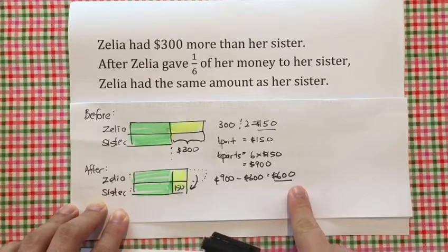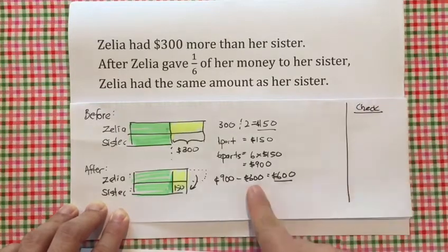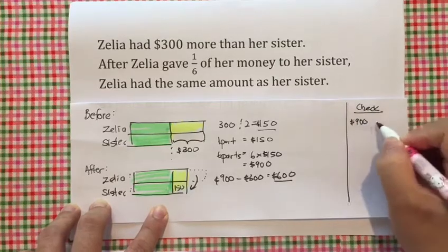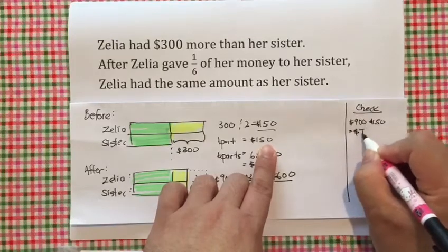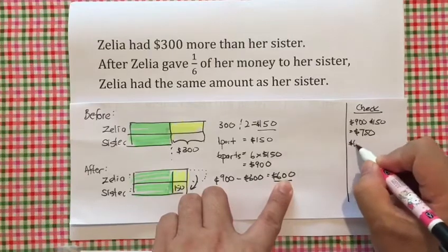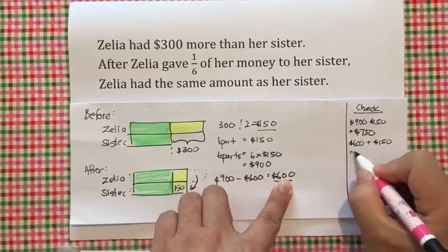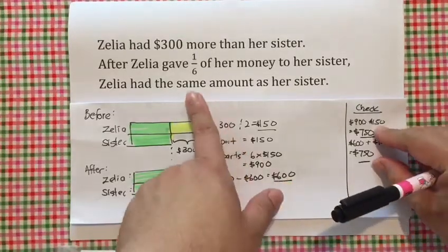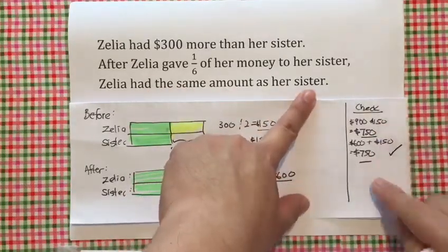Now, are we sure we are right? Let's do some checks to be sure. I have a checking column right here. If Zelia really had $900 to begin with and she gave away $150, she should have $750 left. And if sister really had $600 to begin with and she received $150 from Zelia, then she would have $750. Notice that these two numbers are the same, and that meets this criteria — Zelia had the same amount as her sister. This tells us that our method is correct.